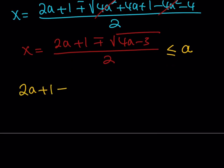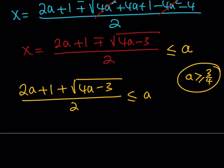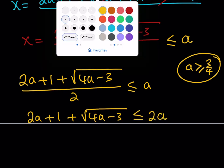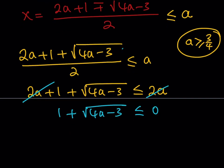Starting with the plus sign: (2a plus 1 plus √(4a minus 3)) / 2 ≤ a. Note that 4a minus 3 must also be non-negative, so a ≥ 3/4. Multiplying both sides by 2 and simplifying, the 2a terms cancel, leaving 1 plus the square root of (4a minus 3) ≤ 0. But this is impossible — the left-hand side is always positive. So the plus-sign case gives no solutions.